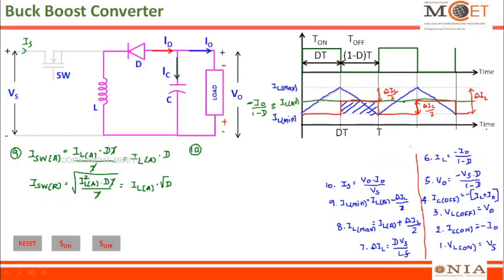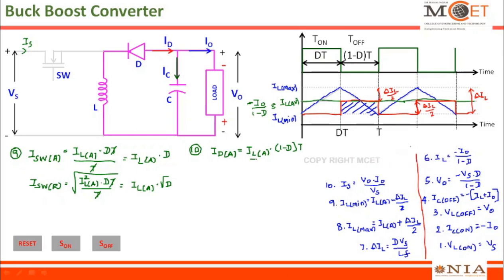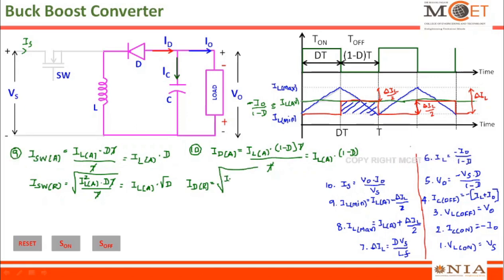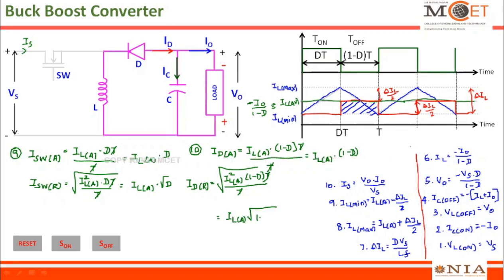When I try to calculate the area for this part, the average value of the diode current, ID average, can be written as IL average into this duration. This duration is (1 minus D) into T, whole divided by T. If I simplify this, T and T will get cancelled, leaving IL average into (1 minus D). This is the expression for the average value of the diode current. Similarly, the RMS value of the diode current can be found out by taking the square root of IL average squared into (1 minus D). This is the expression for the diode current RMS value.